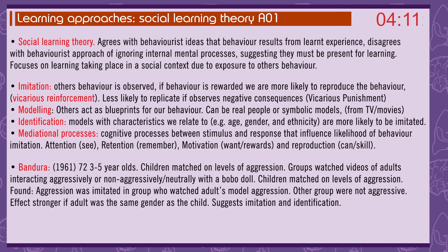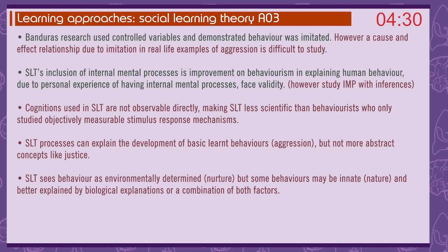Bandura 1961: 72 three-to-five year olds, matched on levels of aggression. Groups watched videos of adults interacting aggressively or non-aggressively with a Bobo doll. Aggression was imitated in the group who watched the adults model aggression; the other group were not aggressive. The effect was stronger if the adult was the same gender as the child, suggesting imitation and identification. Bandura's research used controlled variables and demonstrated behaviour was imitated.